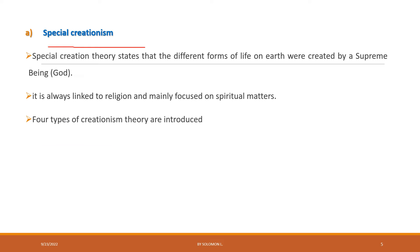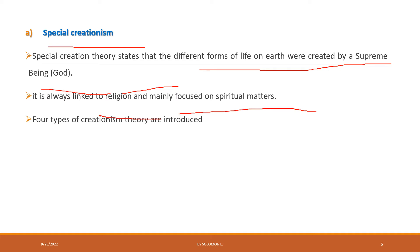Special creationism states that different forms of life on earth were created by a supreme being or by God. It is always linked with religion and mainly focuses on spiritual matters. This type of theory has four sub-types of creationism theories.